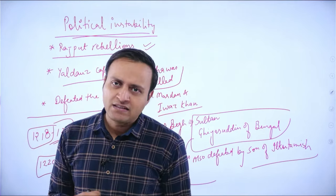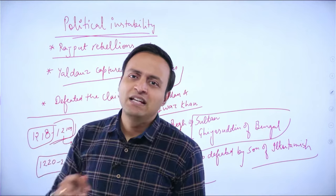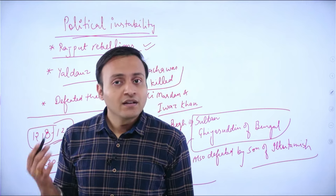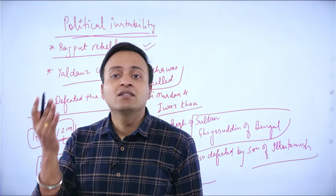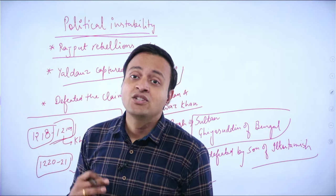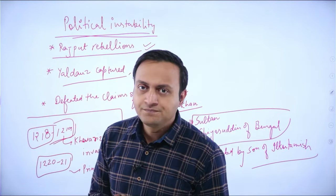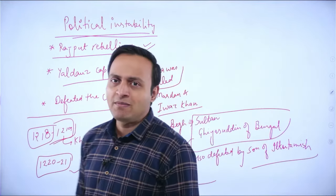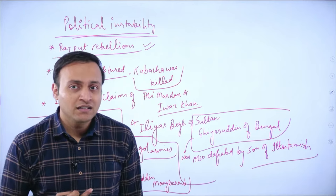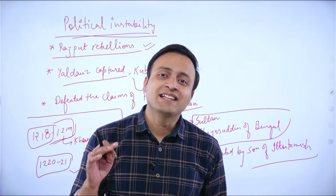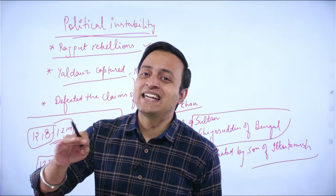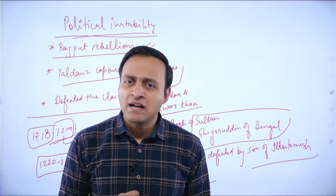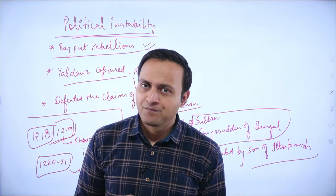It is a well-known fact that wherever Changiz Khan attacked, that city was completely ravaged, and not only that, the city went behind hundreds of years as far as civilizational growth was concerned. So the biggest contribution of Iltutmish in political stability was the denial of political asylum to Prince Jalaluddin Mangbarani of the Khwarizmi Empire. That is why we can say that the biggest contribution in the political stability was granted by Iltutmish through this denial.